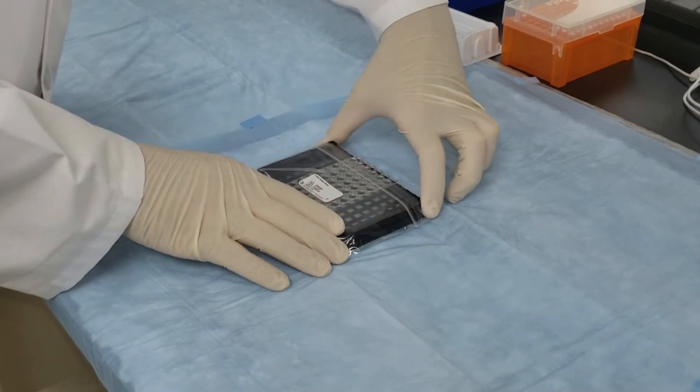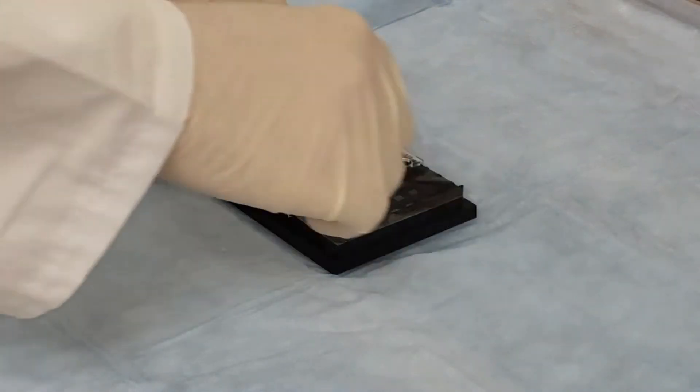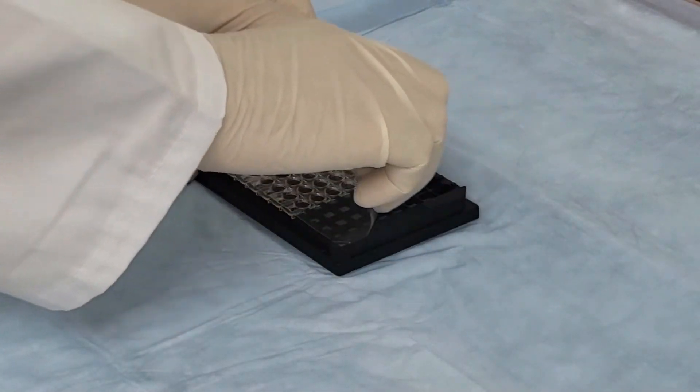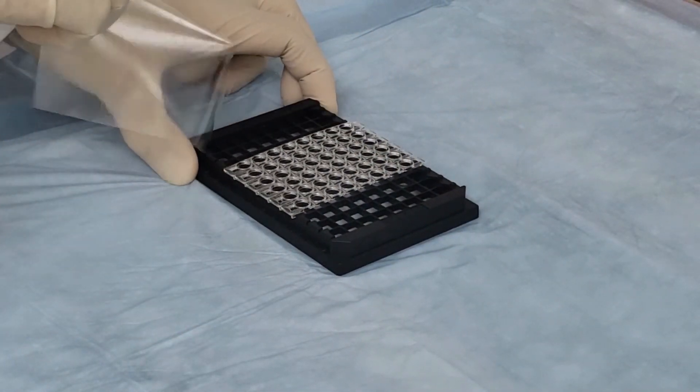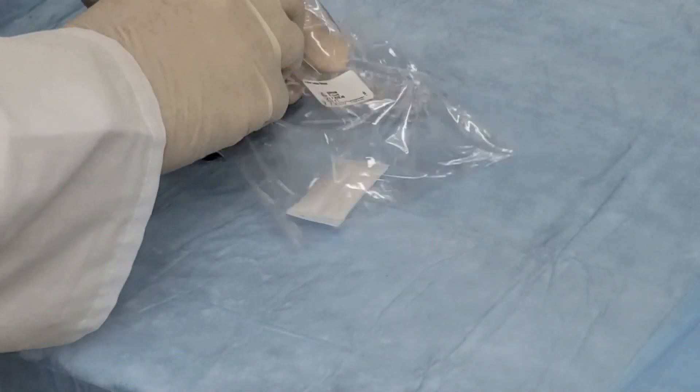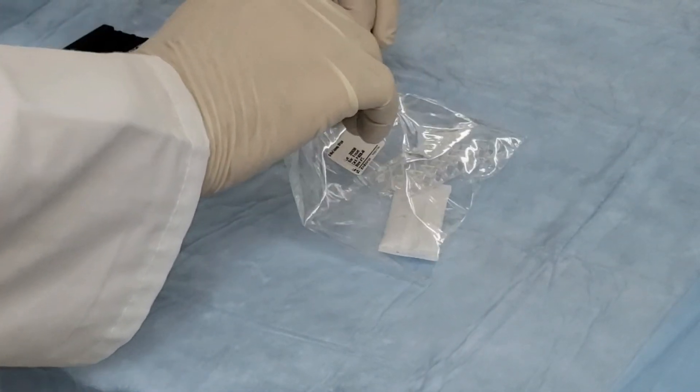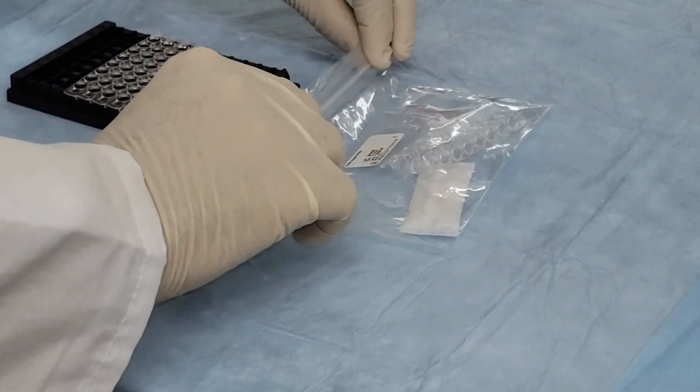To begin, remove the well plate from the bag, then peel back the clear plate seal. Carefully detach any unneeded assay strips from the plate frame and place them back into the storage bag with the provided desiccant packet. Re-seal the bag and store at 4 degrees Celsius.